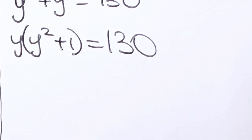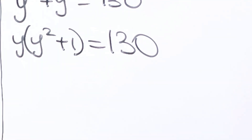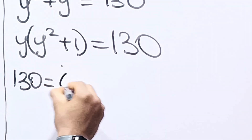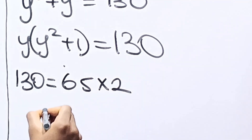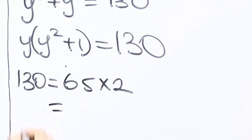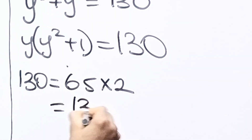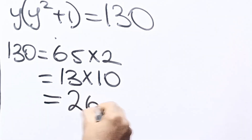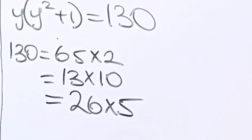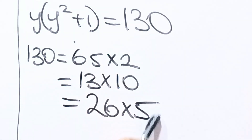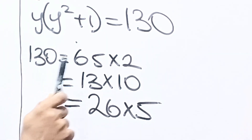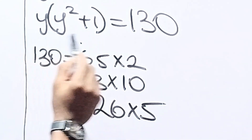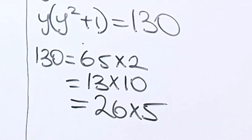Now let's find the factors of 130. 130 is equal to 65 times 2, which is also equal to 13 times 10, and 26 times 5. These are the factor pairs for 130, and we are going to check which of these will substitute for y to give us a perfect answer.